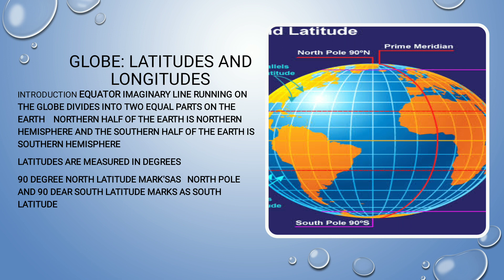In the topic of latitudes and longitudes, we covered: northern hemisphere, southern hemisphere, equator, South Pole, North Pole, Tropic of Cancer, Tropic of Capricorn, Arctic Circle, Antarctic Circle, torrid zones, frigid zones, and temperate zones. We also covered Mauritius Island, Tonga Island, meridians, prime meridian, and Indian Standard Time. The equator is the central line of the globe dividing the northern and southern hemispheres.